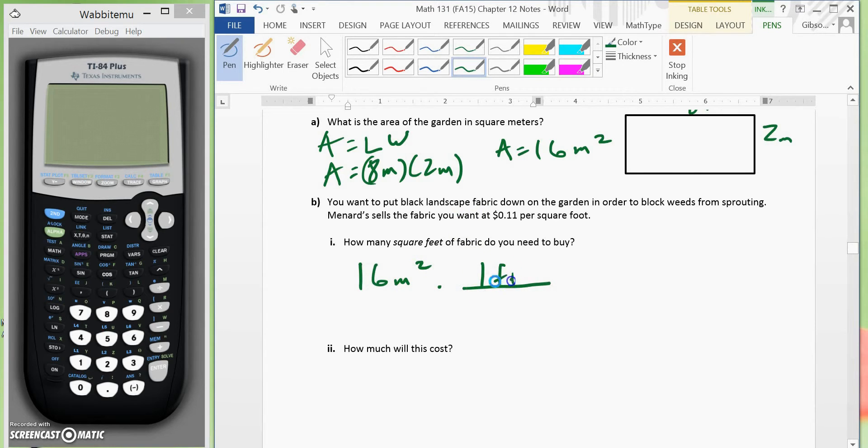So, we know 1 square foot, well, actually, should be 1 square meter is equal to 3.28 feet squared.